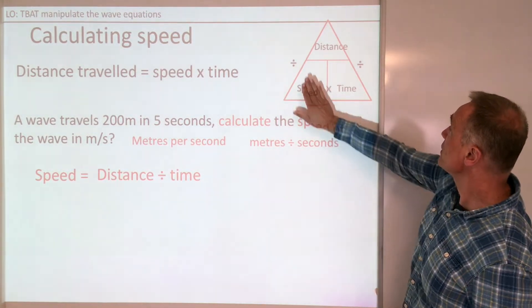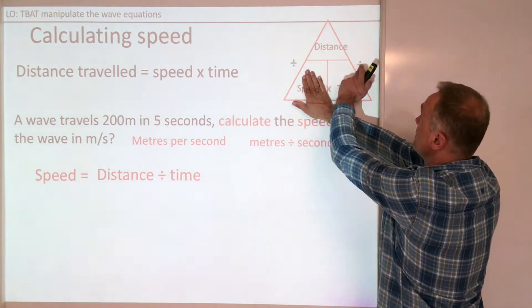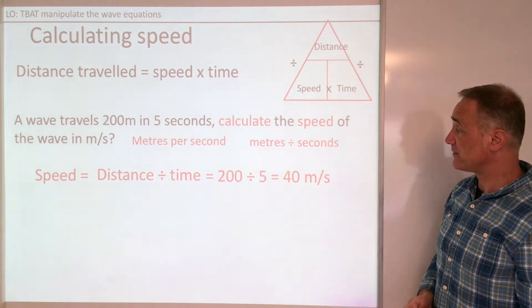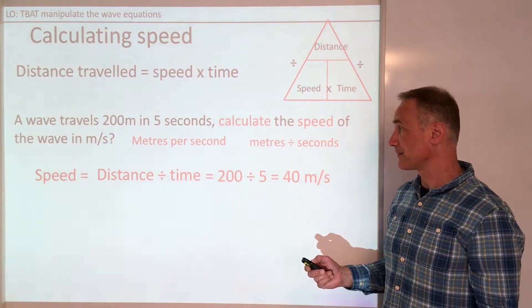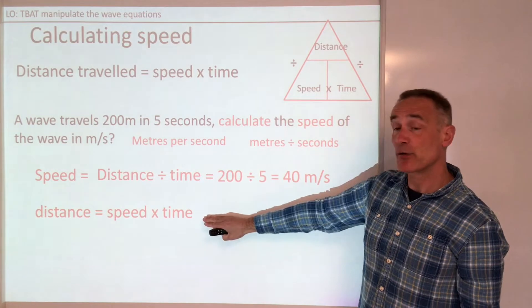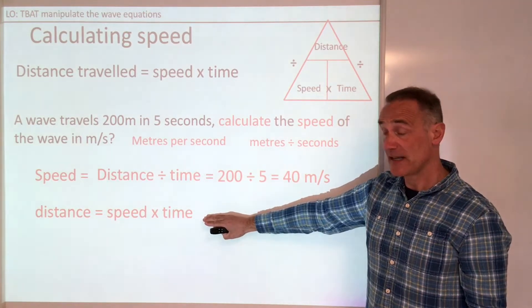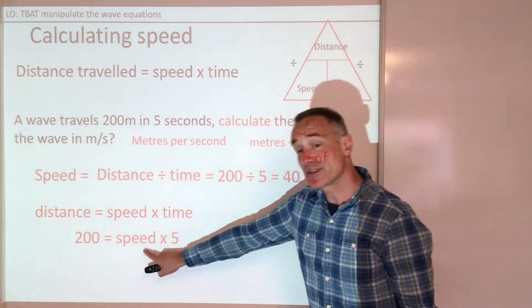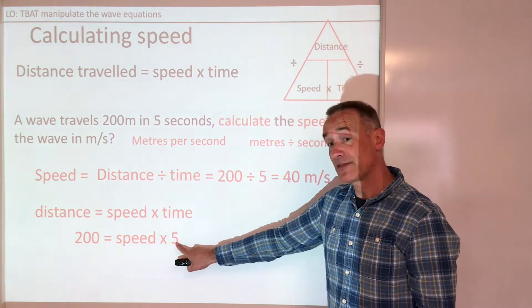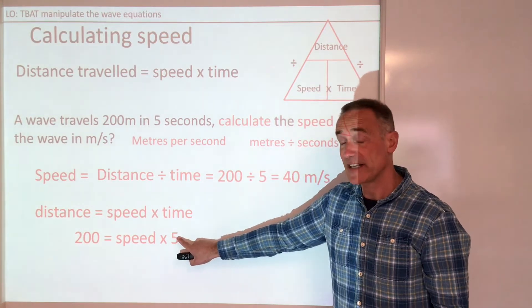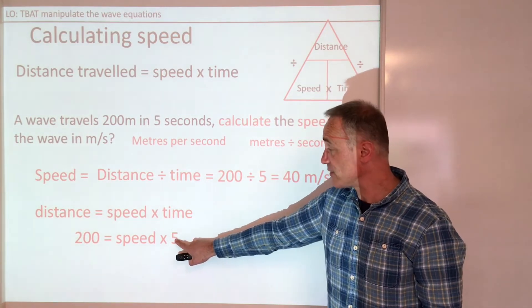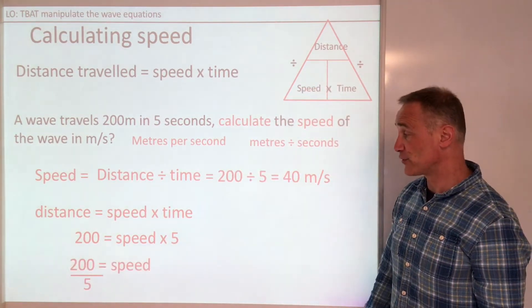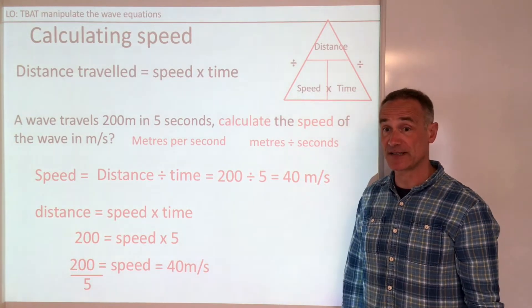You could also use your triangle. Speed is distance divided by time, and that gives you 200 divided by 5 is 40 metres per second. Another way is to quote the equation you know first, put your numbers in, and rearrange. We want speed, so 200 is being multiplied by 5. Do the opposite — divide — and take the 5 down to that side. So 200 divided by 5 equals 40 metres per second.